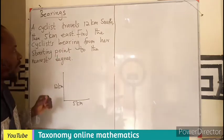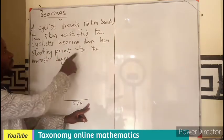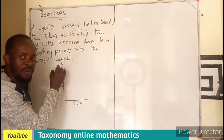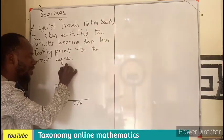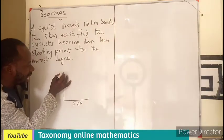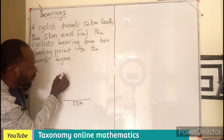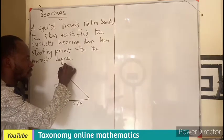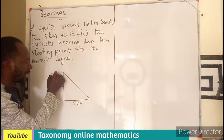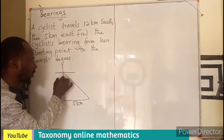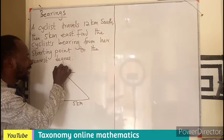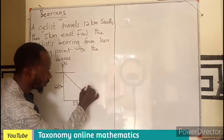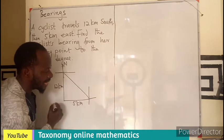We are asked to find the bearing of the cyclist from her starting point. That means I need to go to the north of the starting point and read from the north until I meet the point, or a line that joins the beginning and the end. I need to put a line here and move from the north to meet this line to get a bearing. That means I need to introduce a Cartesian plane at the starting point with the north, and also introduce a Cartesian plane at the end.